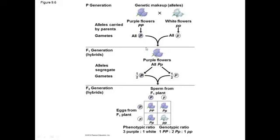When crossing two F1 individuals (big P, little p × big P, little p), the F2 generation Punnett square shows four possibilities: big P big P — purple; big P little p — purple; little p big P — purple; and little p little p — white. This gives the 3 to 1 ratio, or 75% purple and 25% white. The F2 generation is where that recessive trait resurfaces in a simple Punnett square cross.